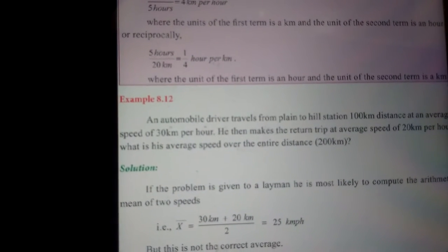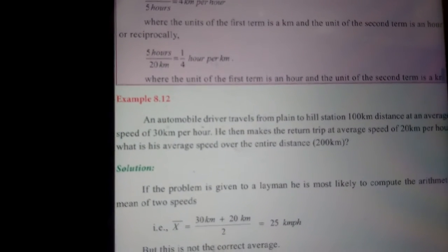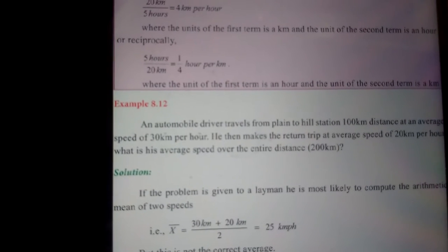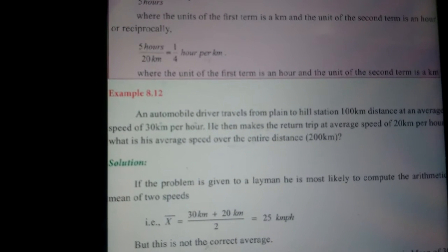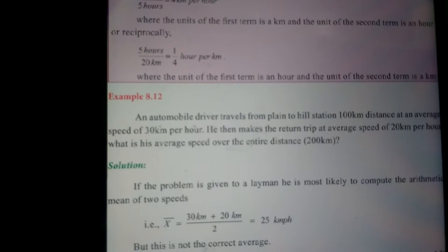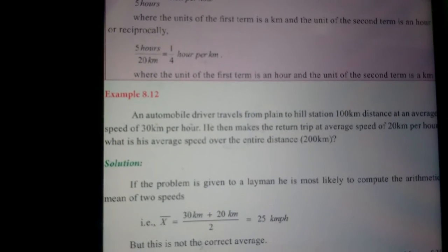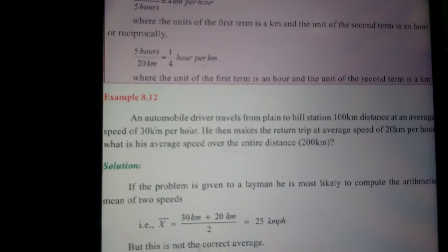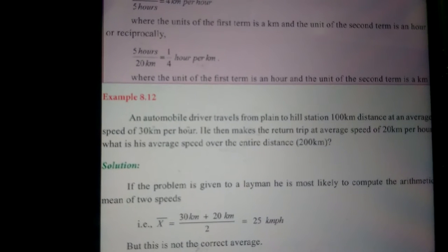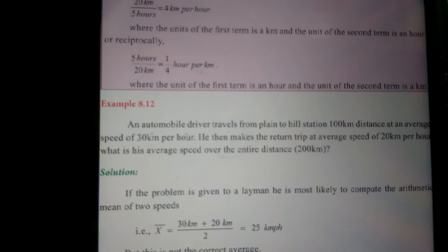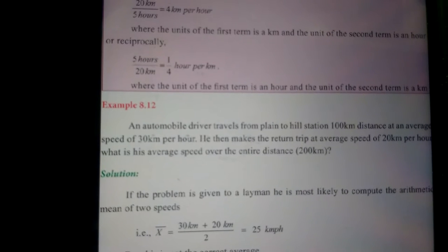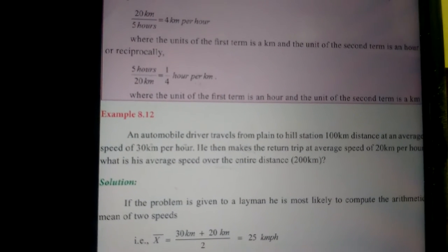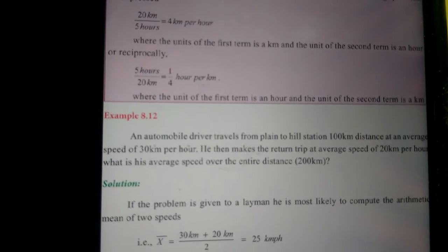Example 8.12: An automobile driver travels from plane to hill station, 100 km distance. The average speed is 30 km per hour. Then he makes the return trip at an average speed of 20 km per hour. What is the average speed over the entire distance? This is 200 km.